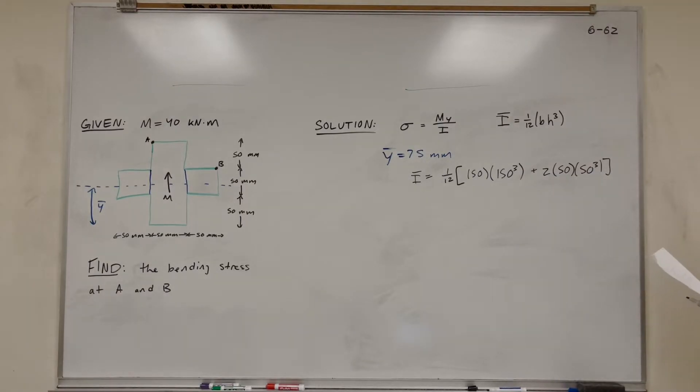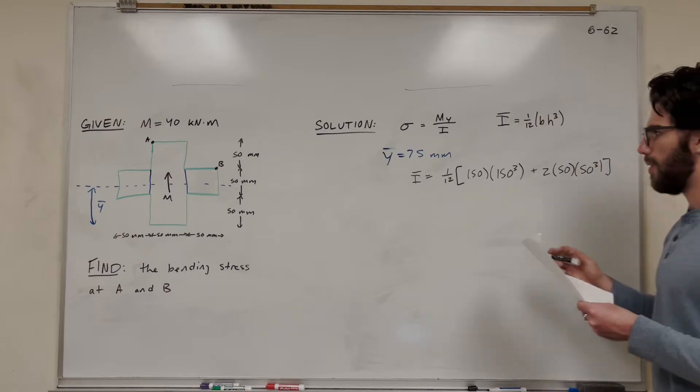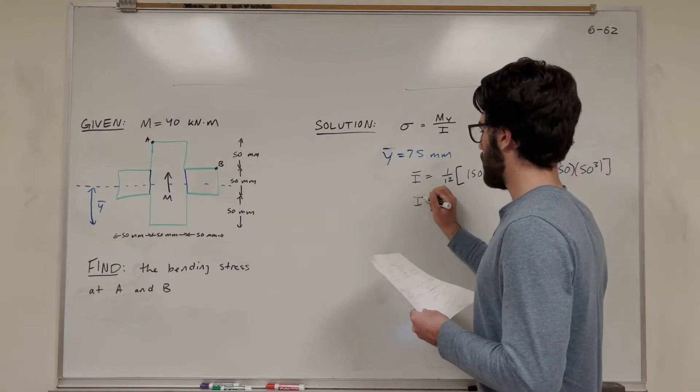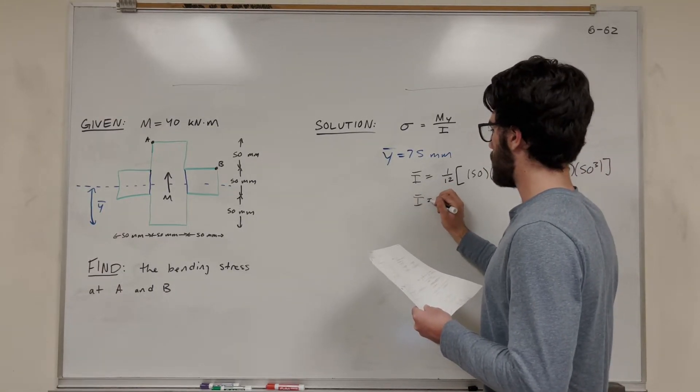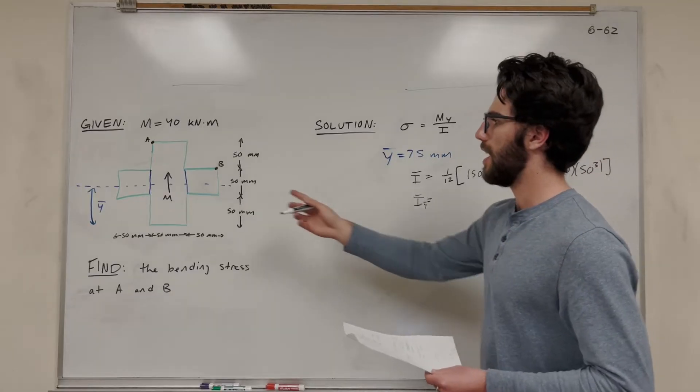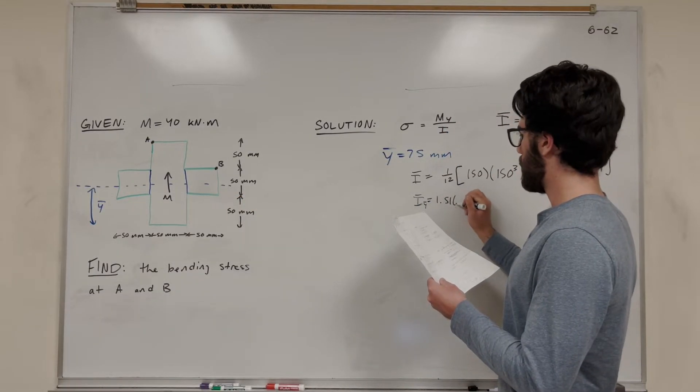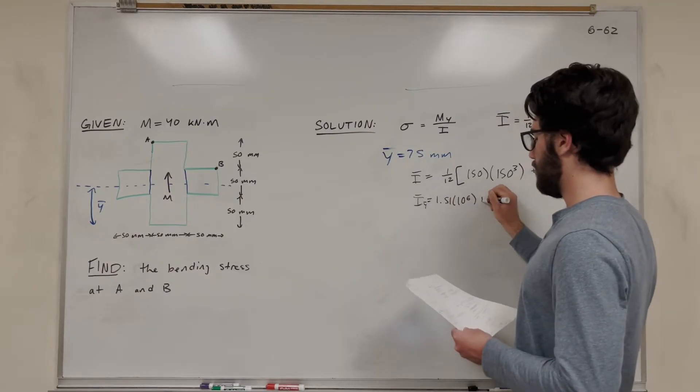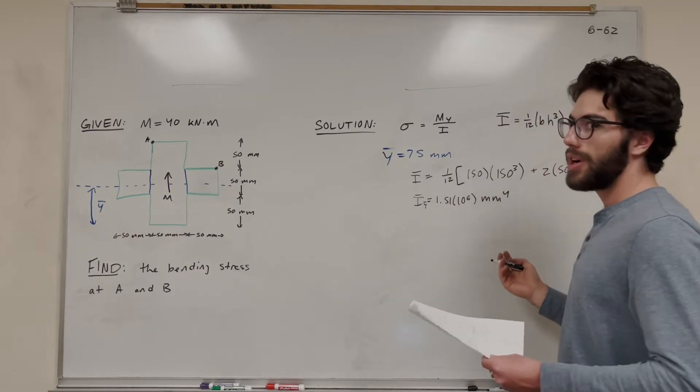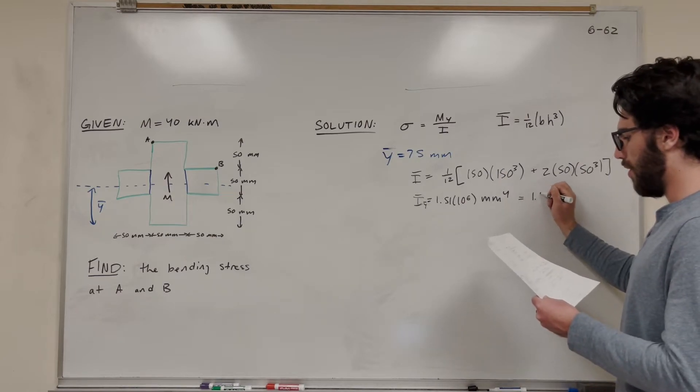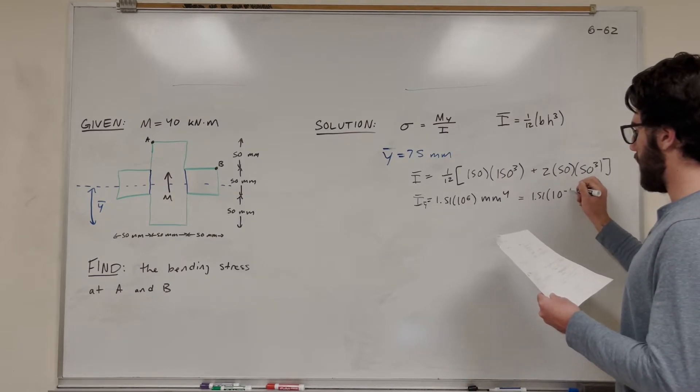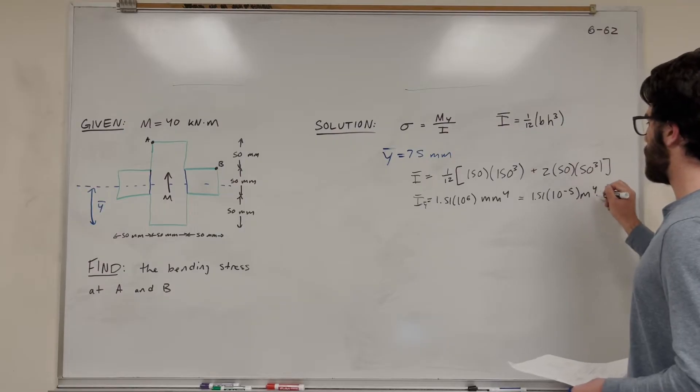And so now we have this equation. Looks good. So now we get that this I bar is equal to, and this is around Y bar, which is that centroid. This is equal to 1.51 times 10 to the 6th millimeters to the 4th. But we want it in meters to the 4th, so we're going to label this also 1.51 times 10 to the negative 5th meters to the 4th.